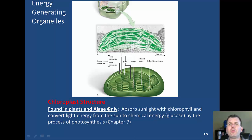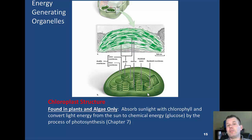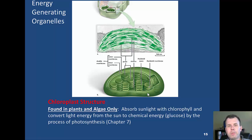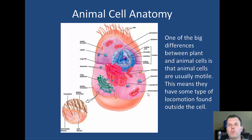The other energy-generating organelle is the chloroplast, responsible for absorbing sunlight and converting it into ATP and glucose. Chloroplasts are found only in plants and algae — they take in sunlight and convert it into sugar. We'll talk more about that when we get to photosynthesis in a couple of weeks.